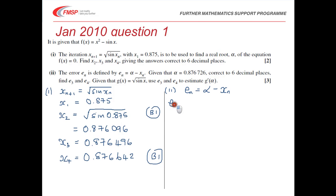So e_3 is going to be alpha minus x_3. So we've got x_3, so we can subtract that from our value of alpha, and we'll get 0.00023.